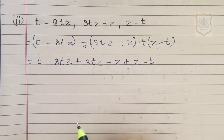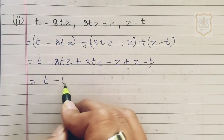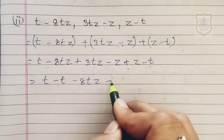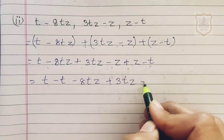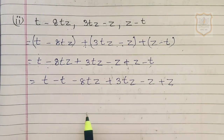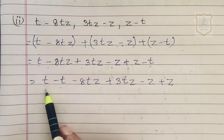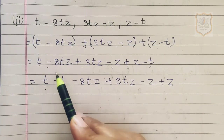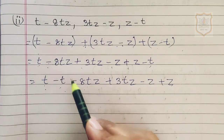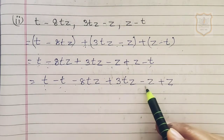Now we arrange the like terms. We write t and minus t together, then minus 8tz and plus 3tz together, then minus z and plus z together. When shifting a term, always carry its sign along with it. So we have: t minus t, minus 8tz plus 3tz, minus z plus z.